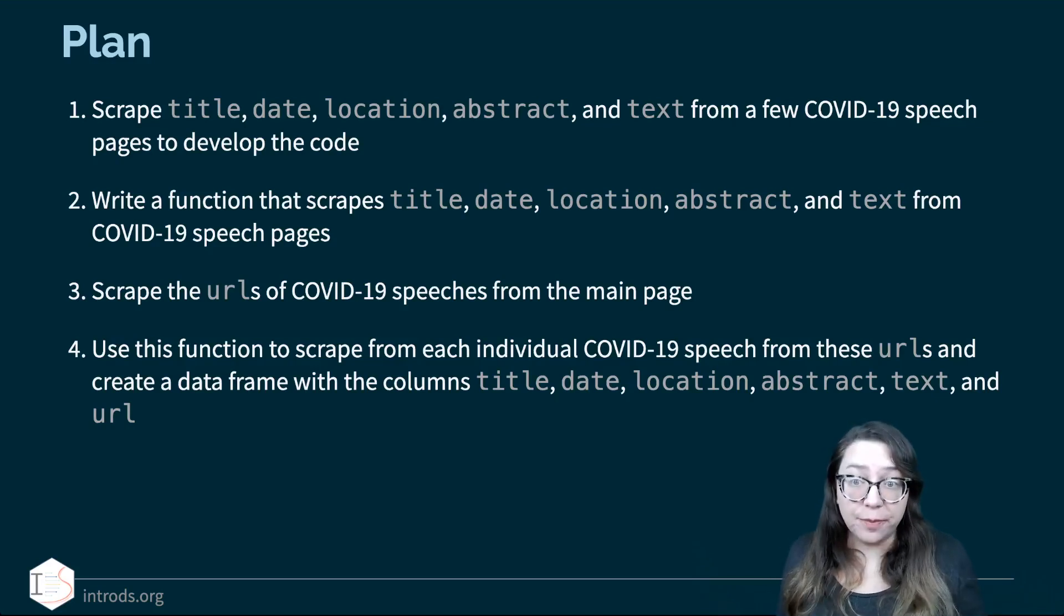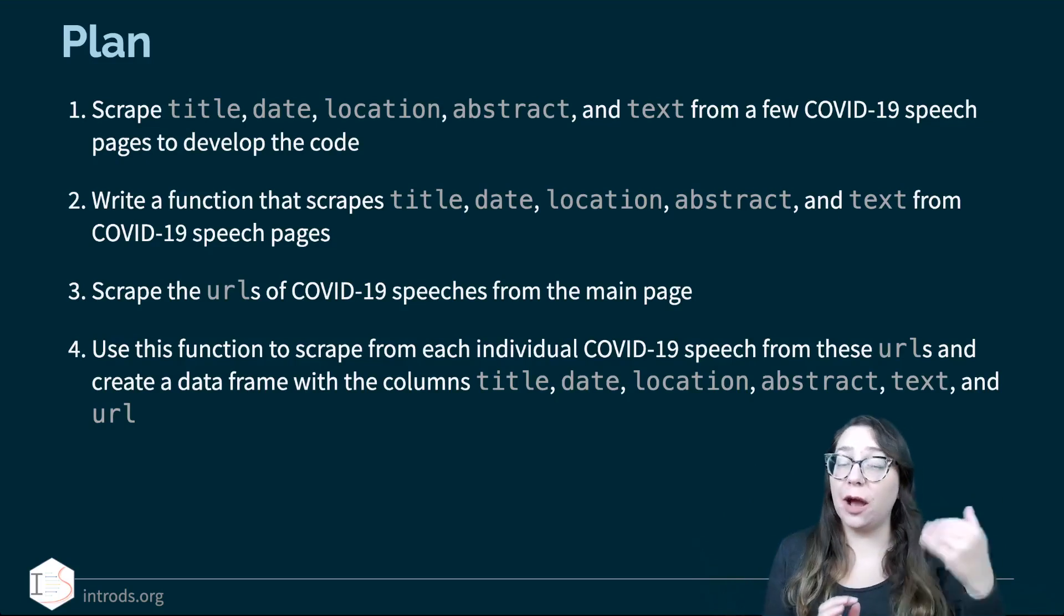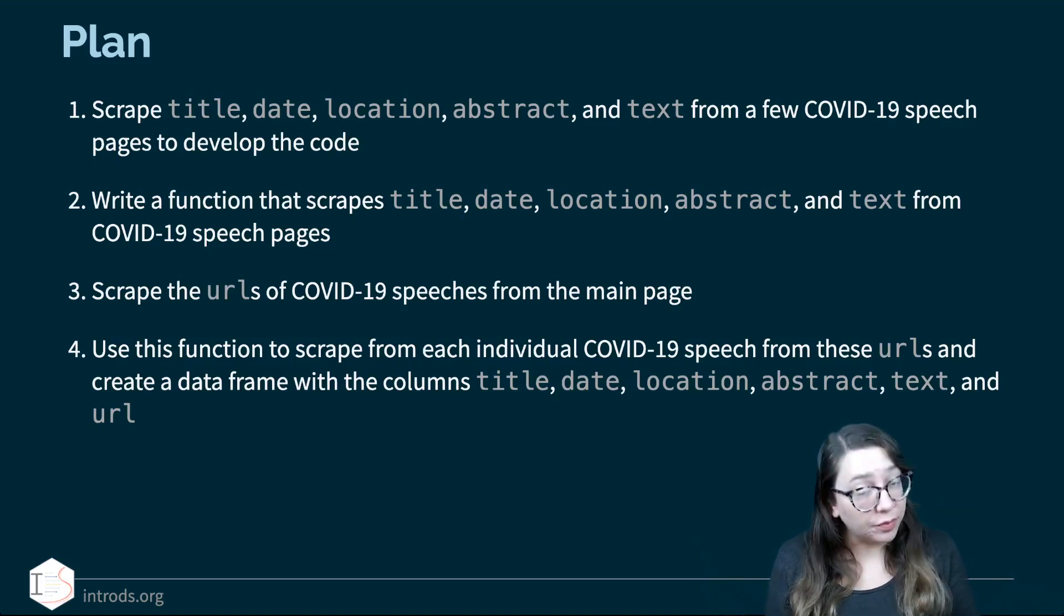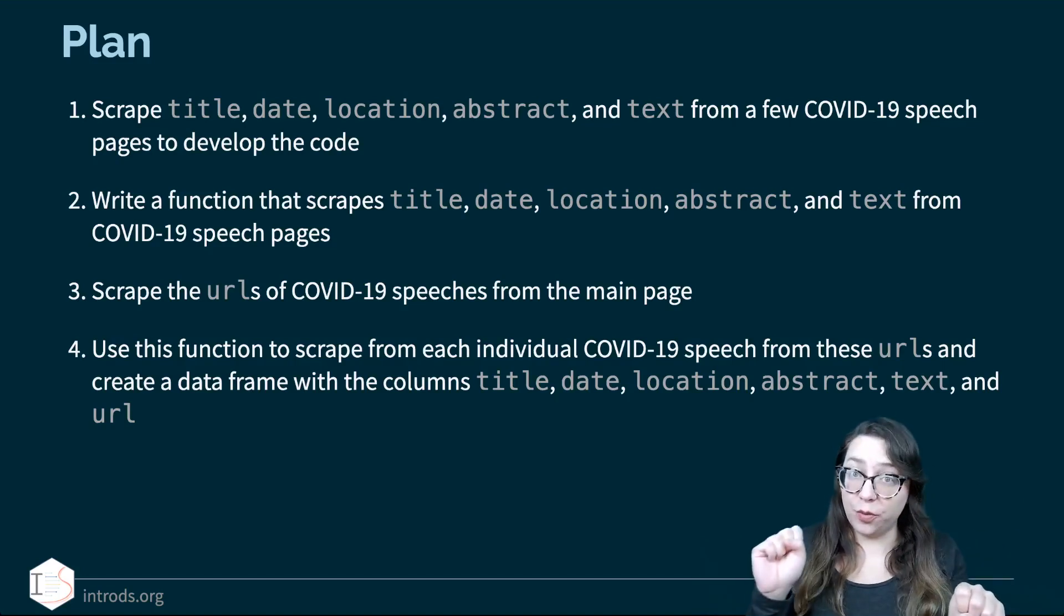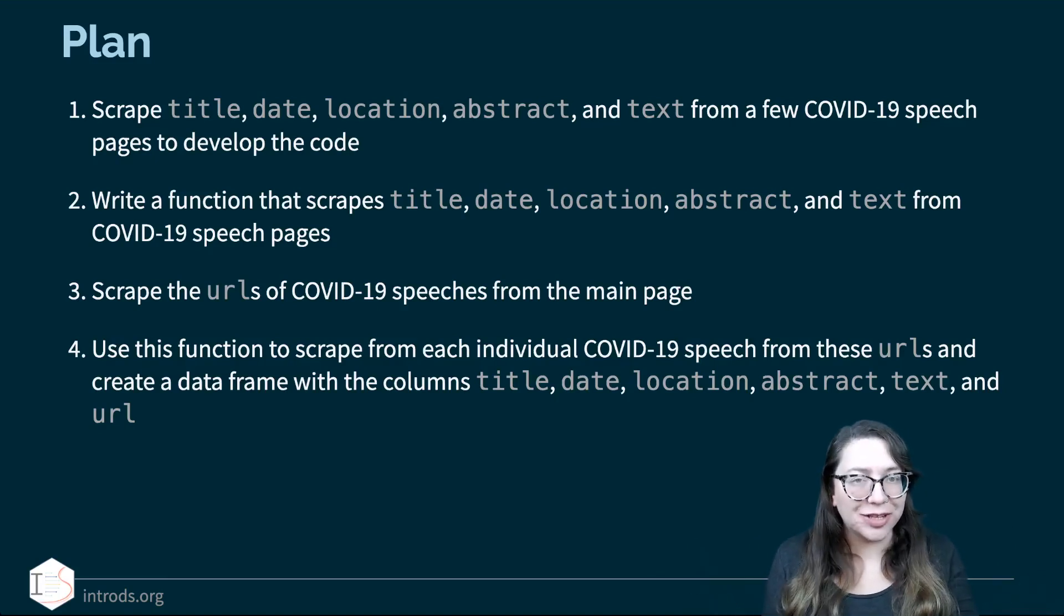So our plan is to scrape title, date, location, abstract and text from a few COVID-19 speech pages to develop the code just so we can see that we develop a code and it works exactly the same across multiple pages. Then we want to write a function that actually does this thing. So we're going to use that code that we develop and wrap it in a function so that we don't have to copy and paste the code for each one of the pages. Then we're going to need a list of those URLs that give us the destination of each one of these speeches. So we need to scrape that information out and then ultimately use the function to scrape and the list of the URLs to apply the function to each one of these URLs to get the information that we need title, date, location, abstract, text and URL from each one of the speeches and put everything into that data frame we saw earlier.